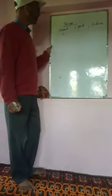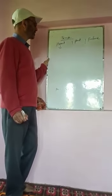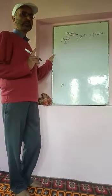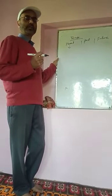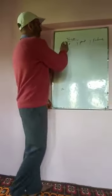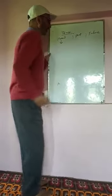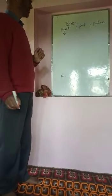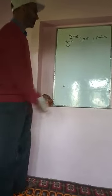Our topic today is tense. What is tense? In grammar, tense shows the time of the action, degree of the action, or state of the action. There are three tenses: present, past, and future. When an action took place in the past it is called past tense, when it is taking place in the present time it is present tense, and when it will take place in the future it is future tense.